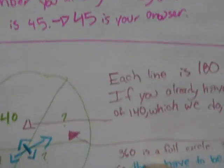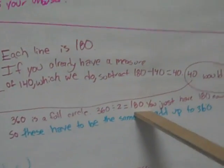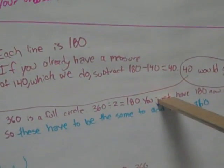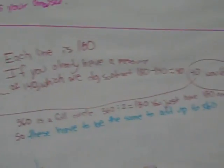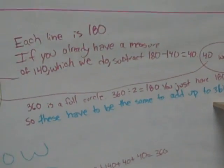So 40 would go right there. 360 is a full circle. 360 divided by 2 equals 180. You just have 180 now. So these have to be the same to add up to 360.